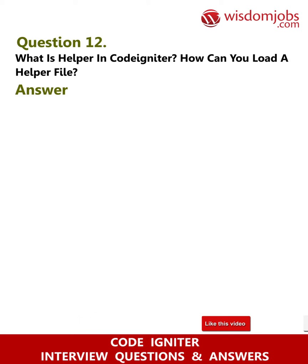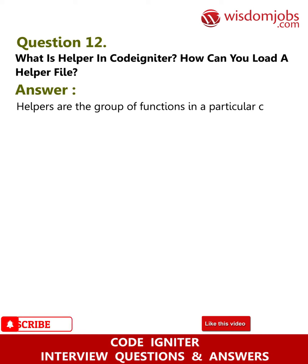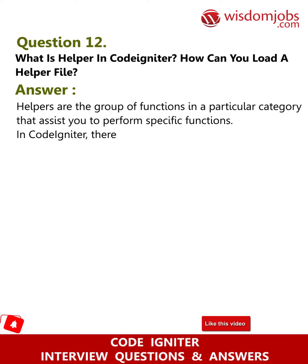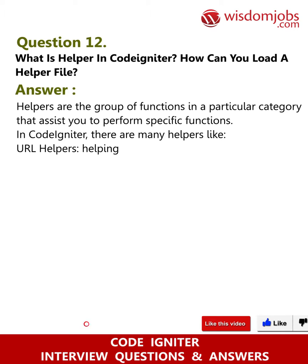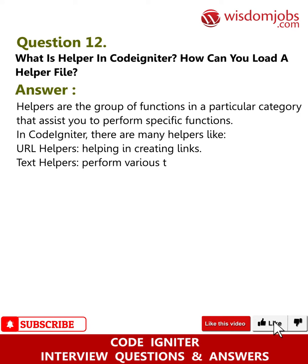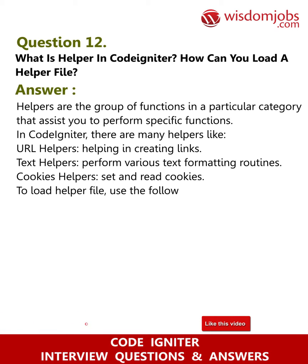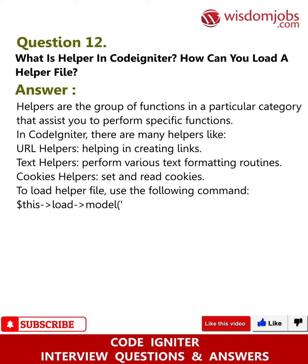Question 12: What is a helper in CodeIgniter and how can you load a helper file? Answer: Helpers are groups of functions in a particular category that assist you to perform specific functions. In CodeIgniter, there are many helpers — URL helpers help in creating links, text helpers perform various text formatting routines, and cookie helpers set and read cookies. To load a helper file, use: $this->load->helper('helper_name').